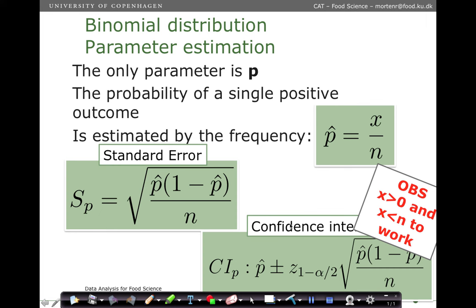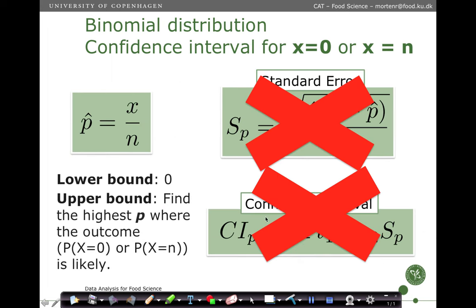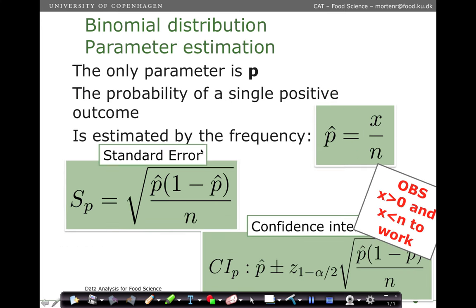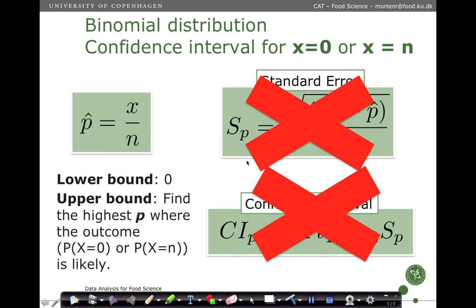In order to construct a confidence interval, it is centered around p-hat plus or minus a set fractile times this standard error. In the case where x is 0 or x equals n, we would get p-hat being 0 or 1. In that case, you are not capable of calculating the standard error because one of the parts is going to be 0, and you are not able to compute a confidence interval using the central limit theorem formula.